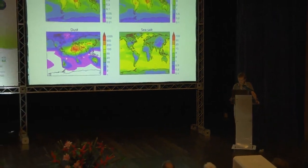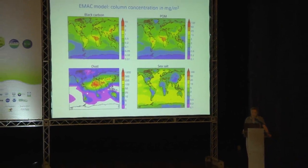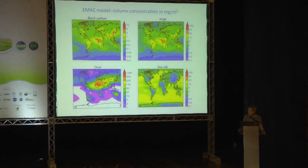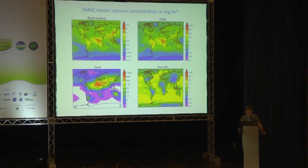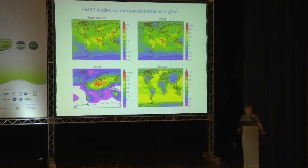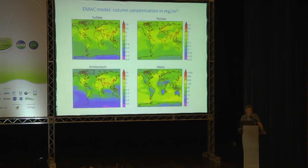These are images you would typically see from these models. We have black carbon — please note the scale changes — particulate organic matter, dust, and sea salt. You would expect the dust to be high over the Sahara and other deserts, and sea salt over the ocean. This integrates into what we need for these assessments: PM2.5.